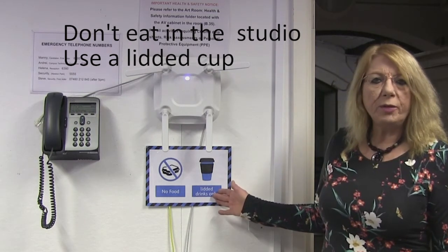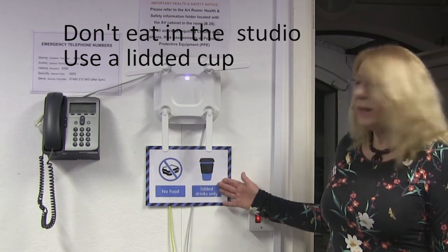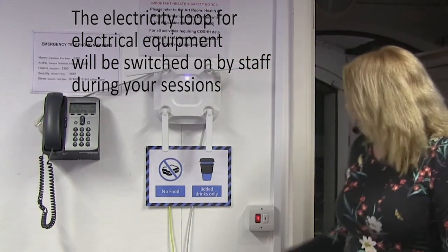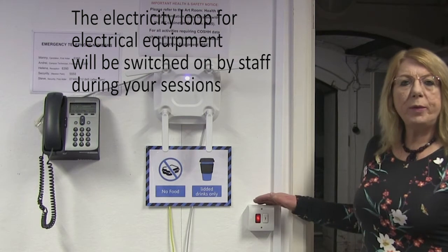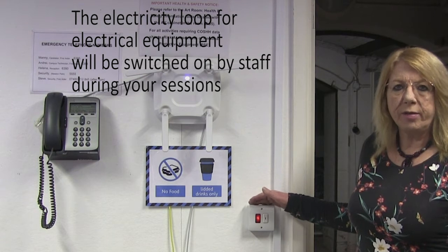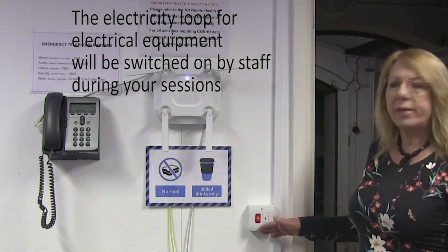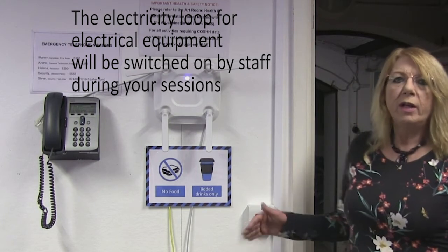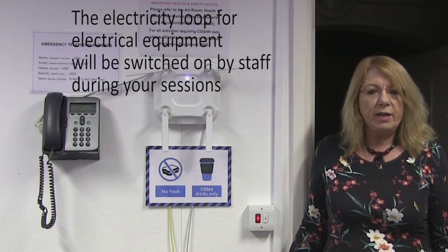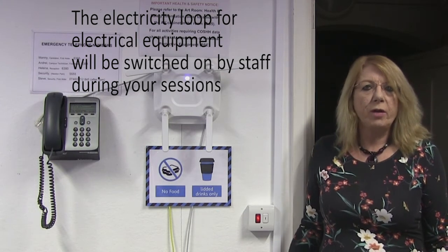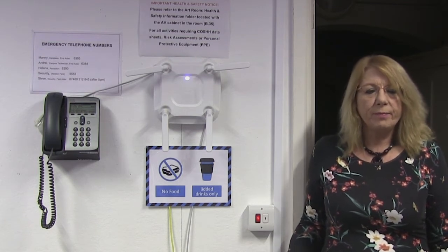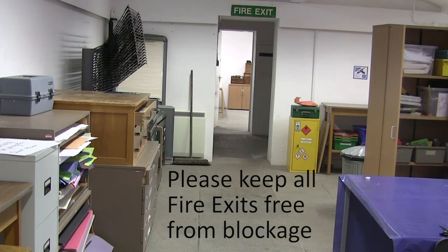You are requested please not to eat in the studio, and if you want to drink then please use a lidded cup. This is the electricity loop — it will be switched on by qualified and insured staff for your subject sessions. In directed time the loop won't necessarily be switched on, so the light will be off. This is a health and safety issue, as this loop enables you to plug in potentially inflammable equipment such as hot glue guns, hot wax heaters, and irons. Fire exits are clearly labeled and must be kept clear.